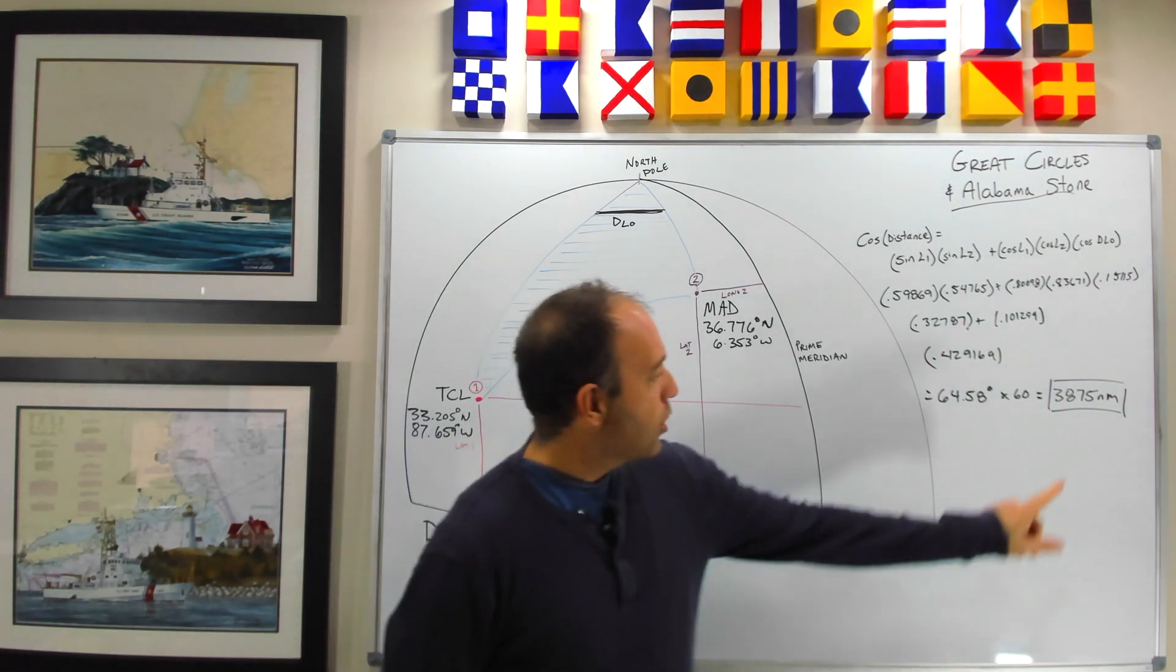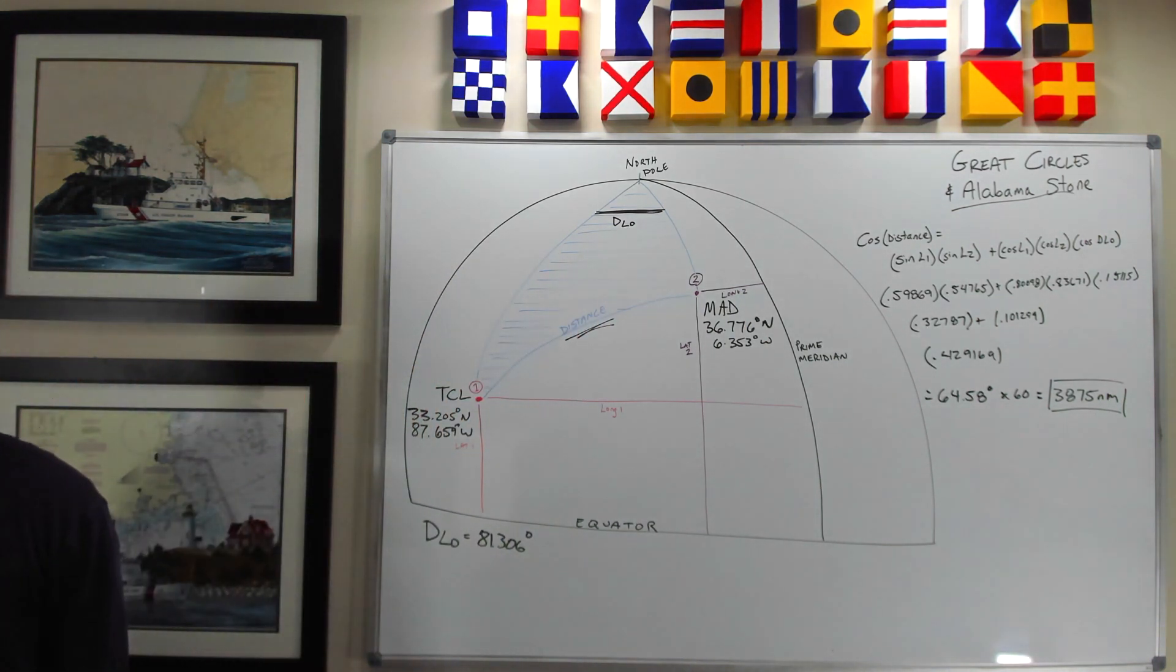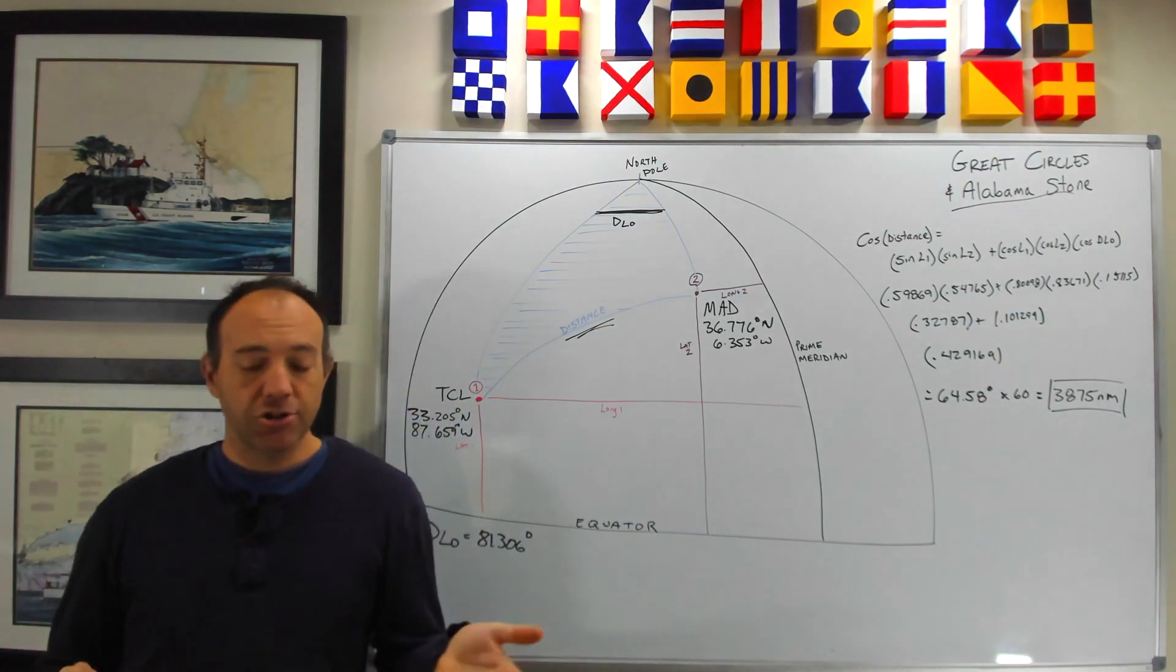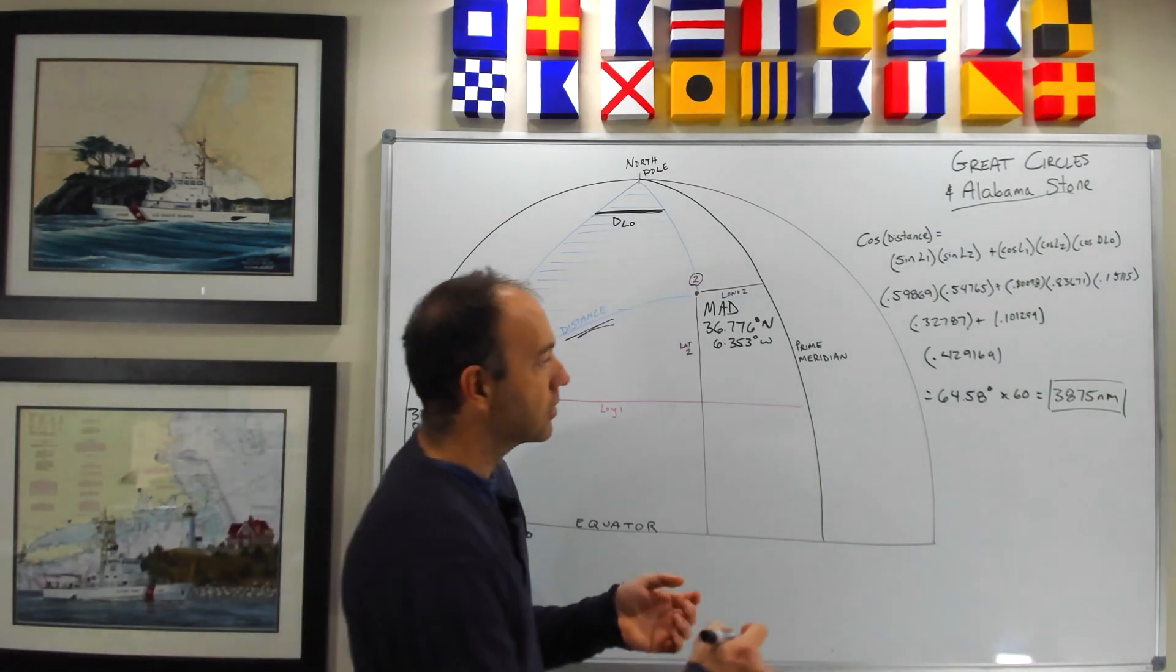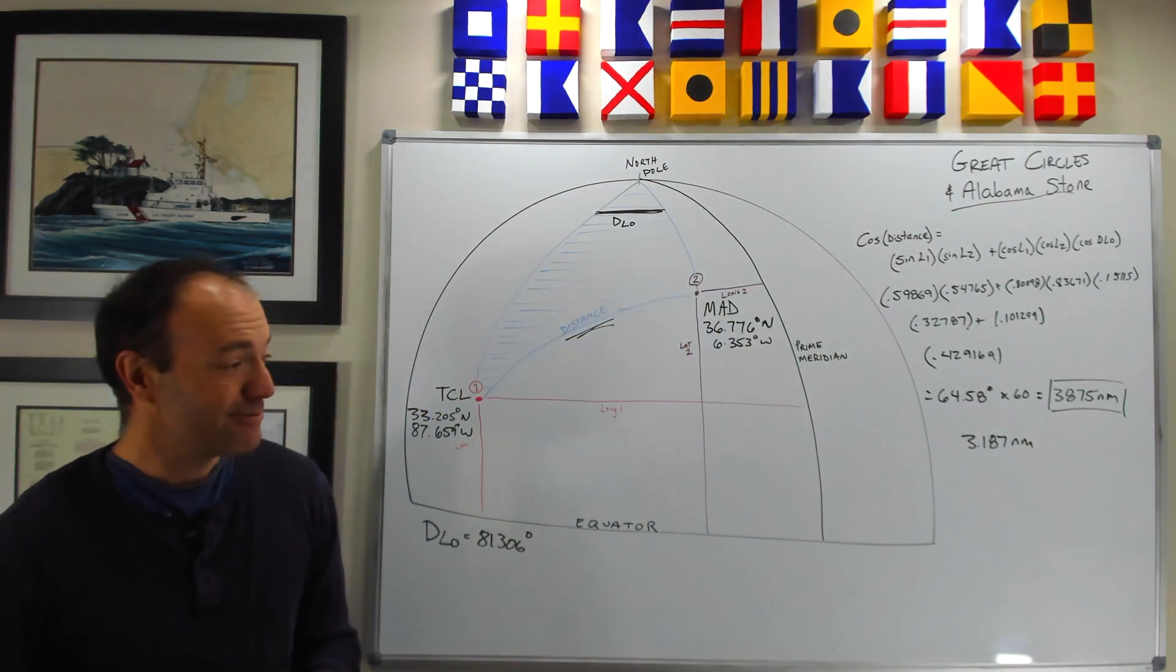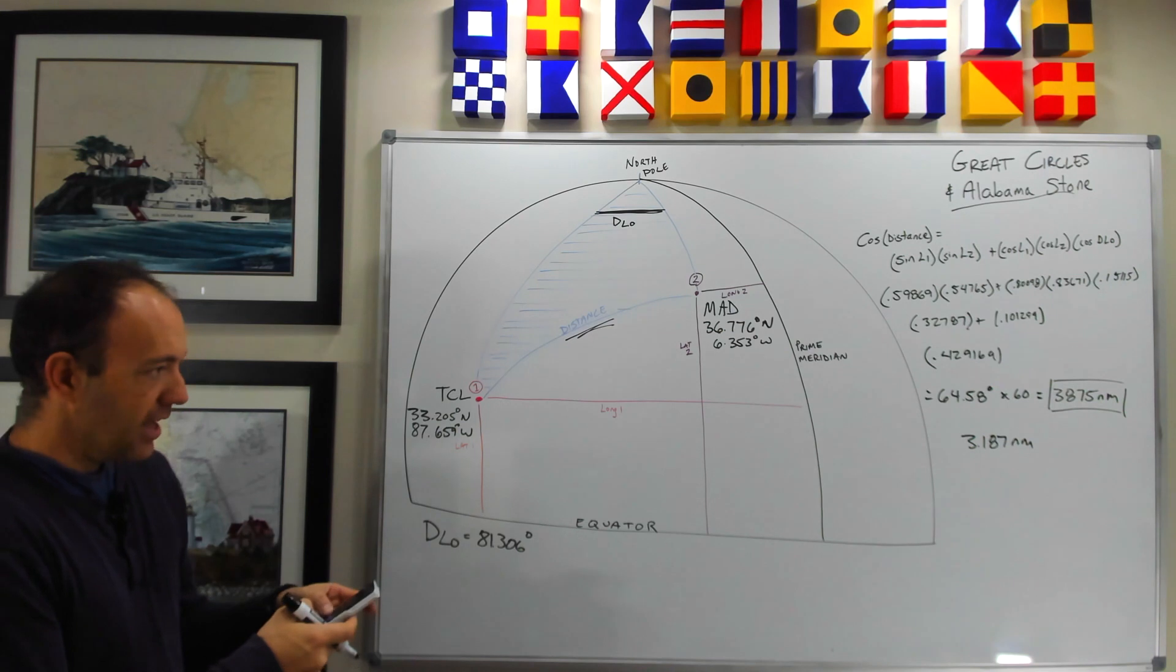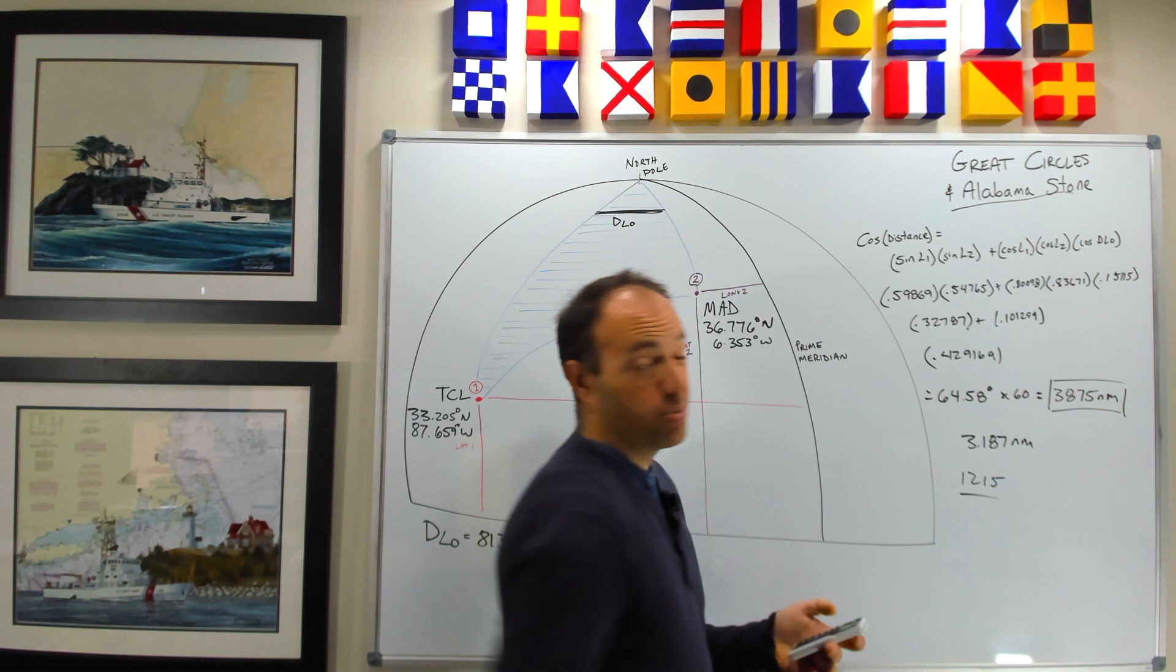So 1232 is not 3,875, but there is a cool little connection in that the Spanish league. So if you've heard of the word league before, it's a measure of distance. And the traditional Spanish league in this timeframe was about 3.187 nautical miles. Give or take. I'm not a historian. But if you take 3875 divided by 3.187, you get 1215, which is pretty darn close to 1232.